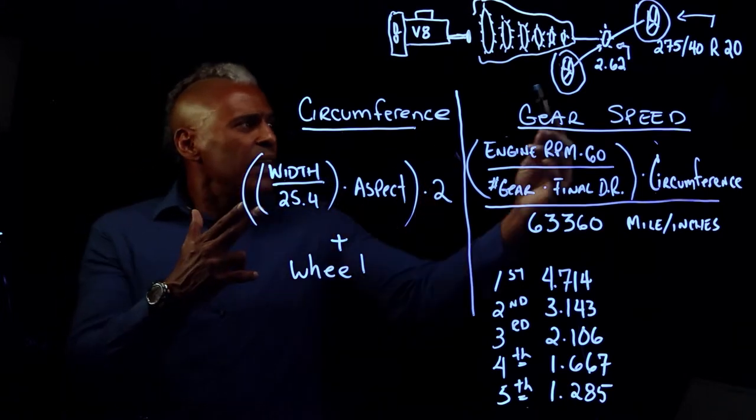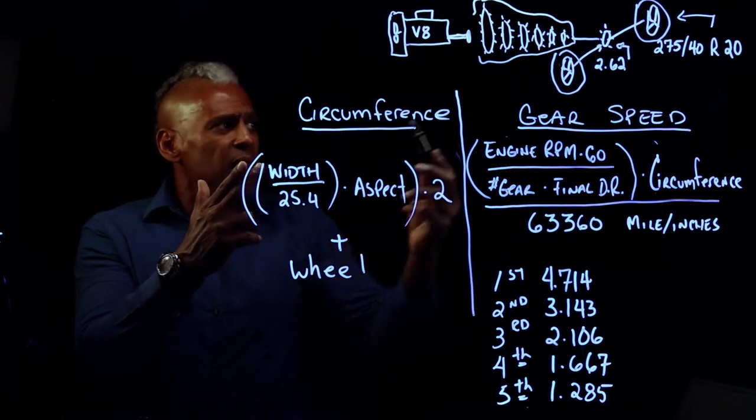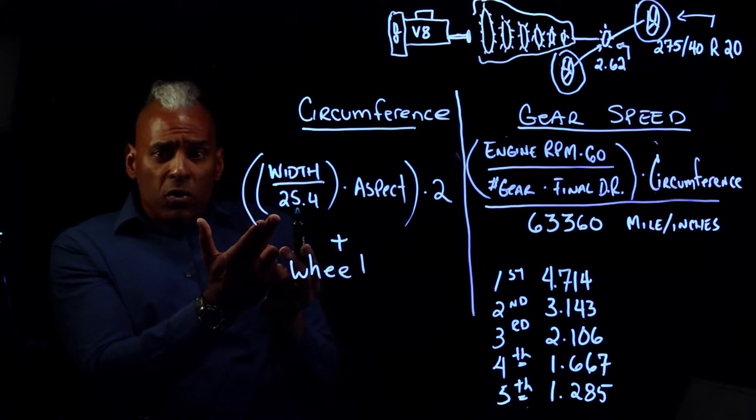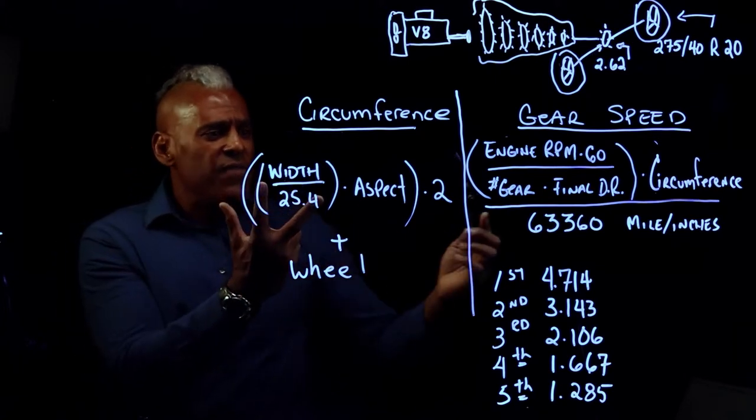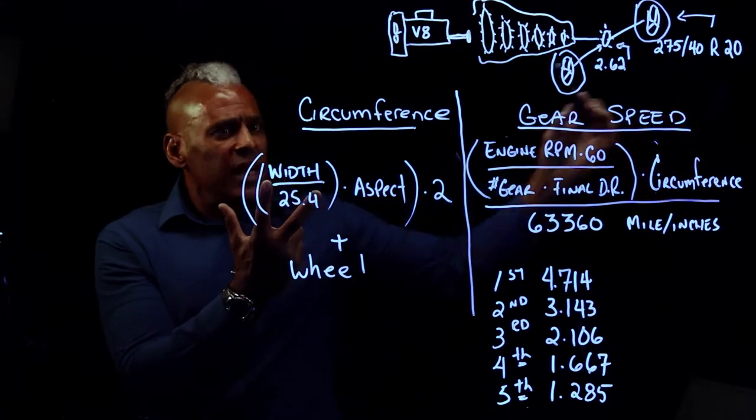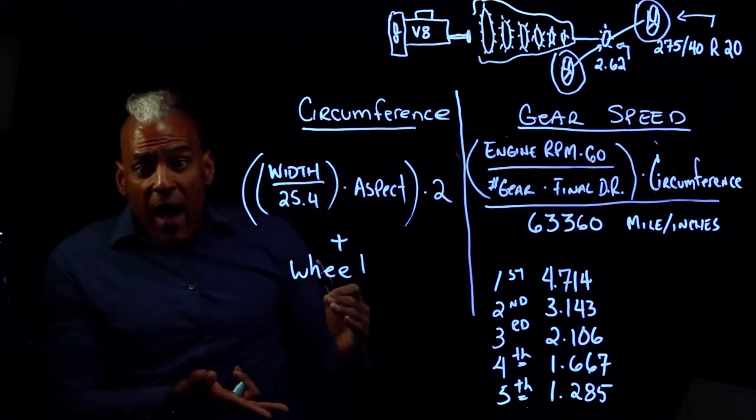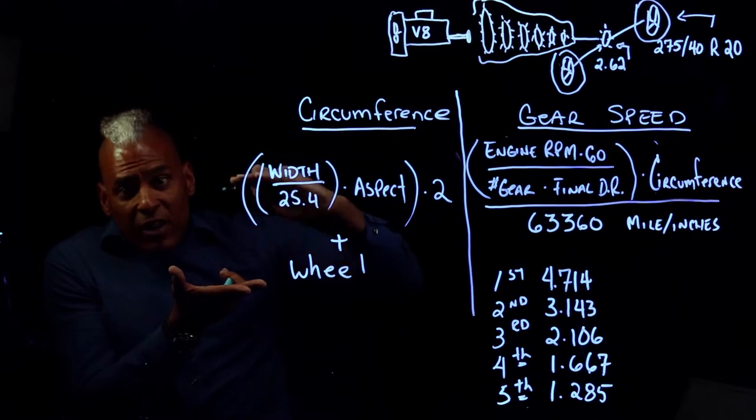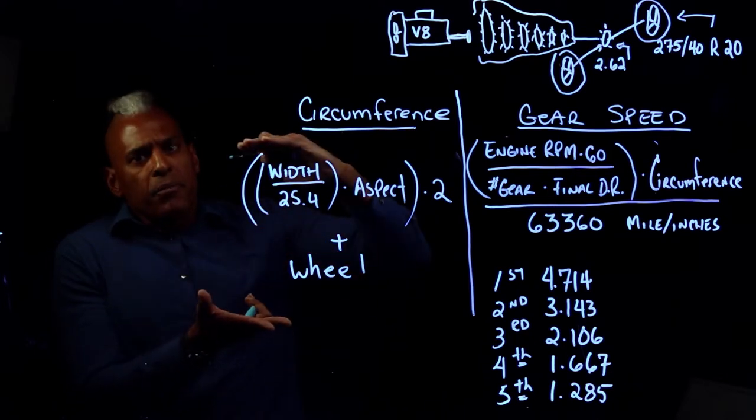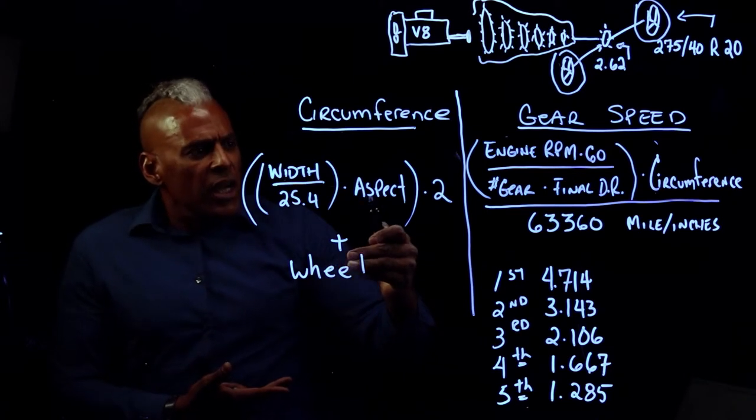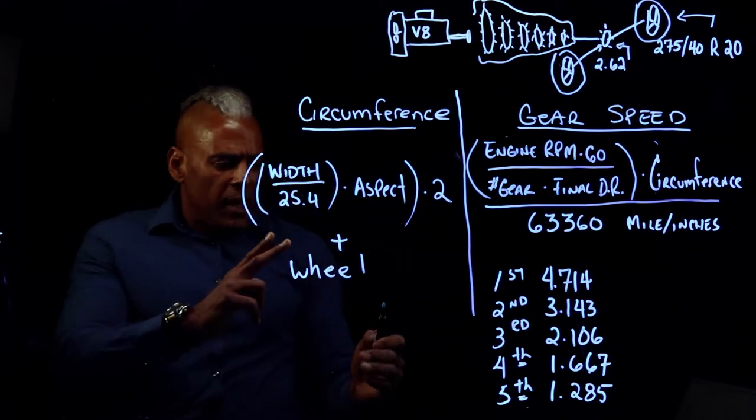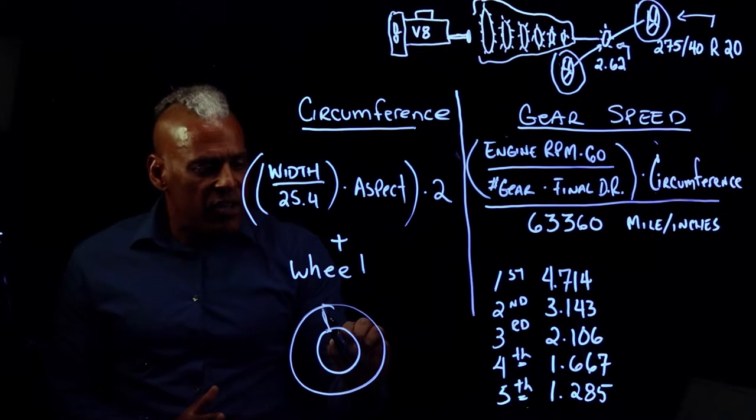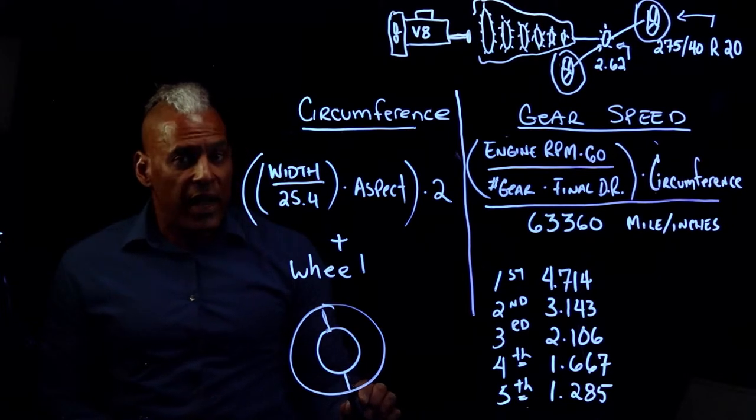Here we have a calculation that lays that out. First, we need the width of the tire, that's this 275, the width of the tire, but that's in millimeters and that has to be converted to inches, which the conversion factor is 25.4. Thereafter, the next value that's important is the aspect ratio. That is the height of the tire. Low profile people know what I'm talking about. You multiply that aspect ratio by 2 because we have this side and the other side.